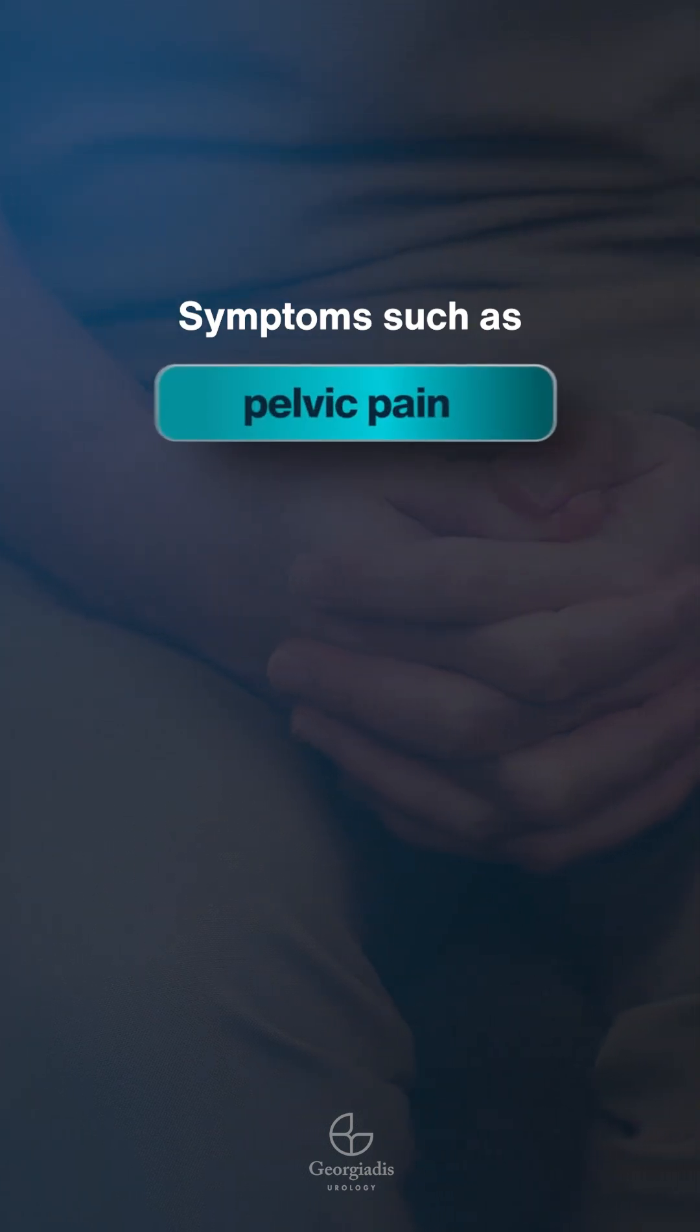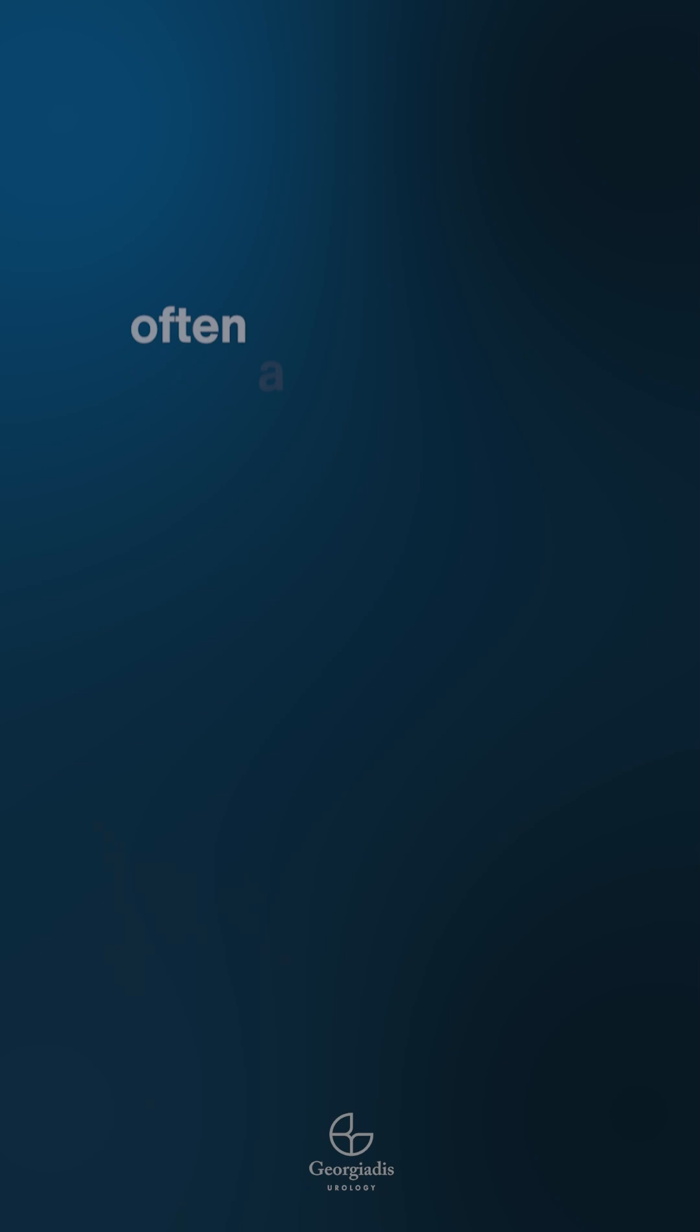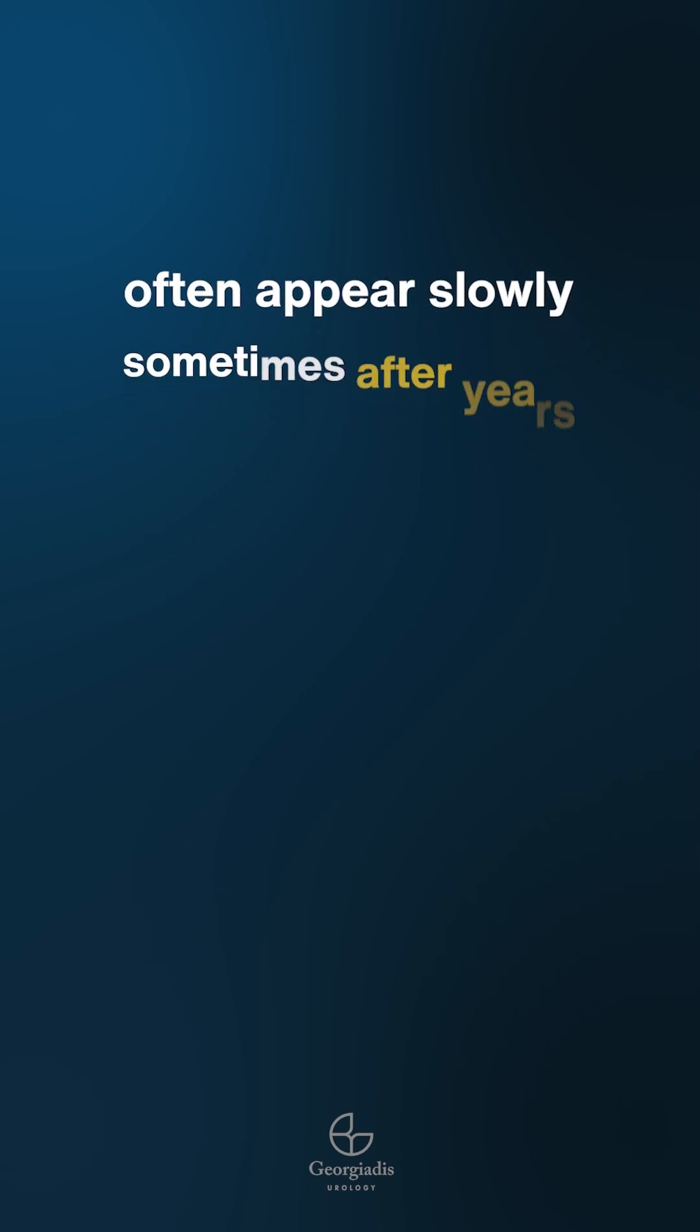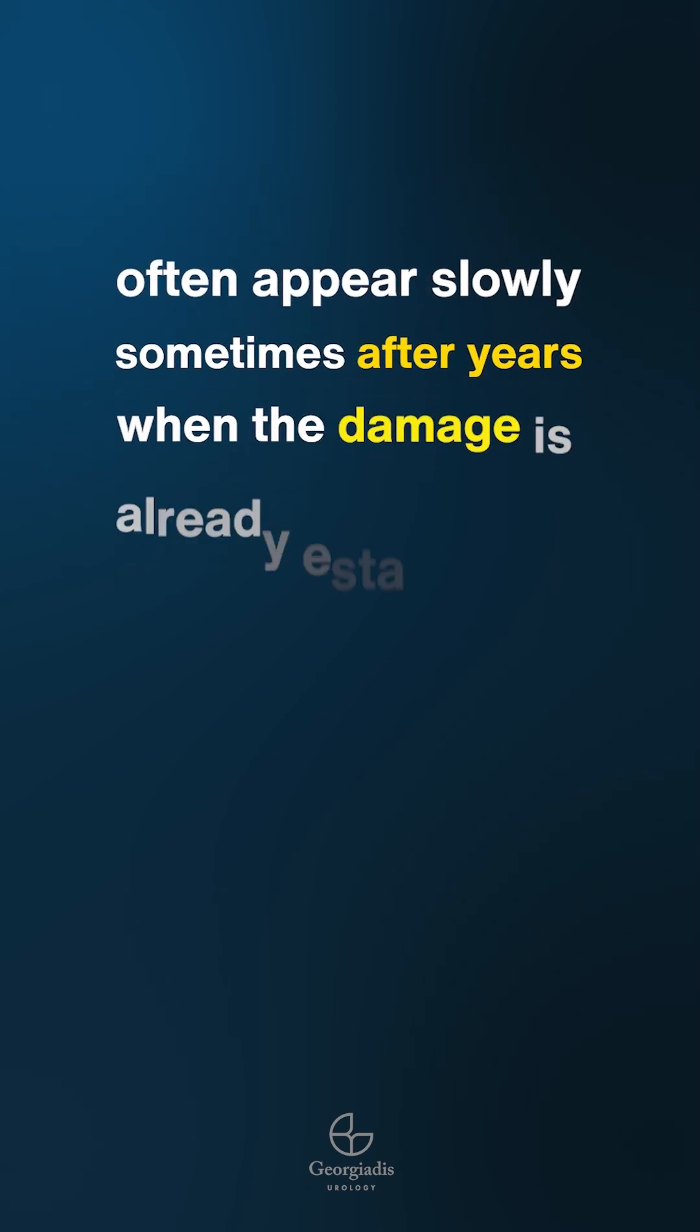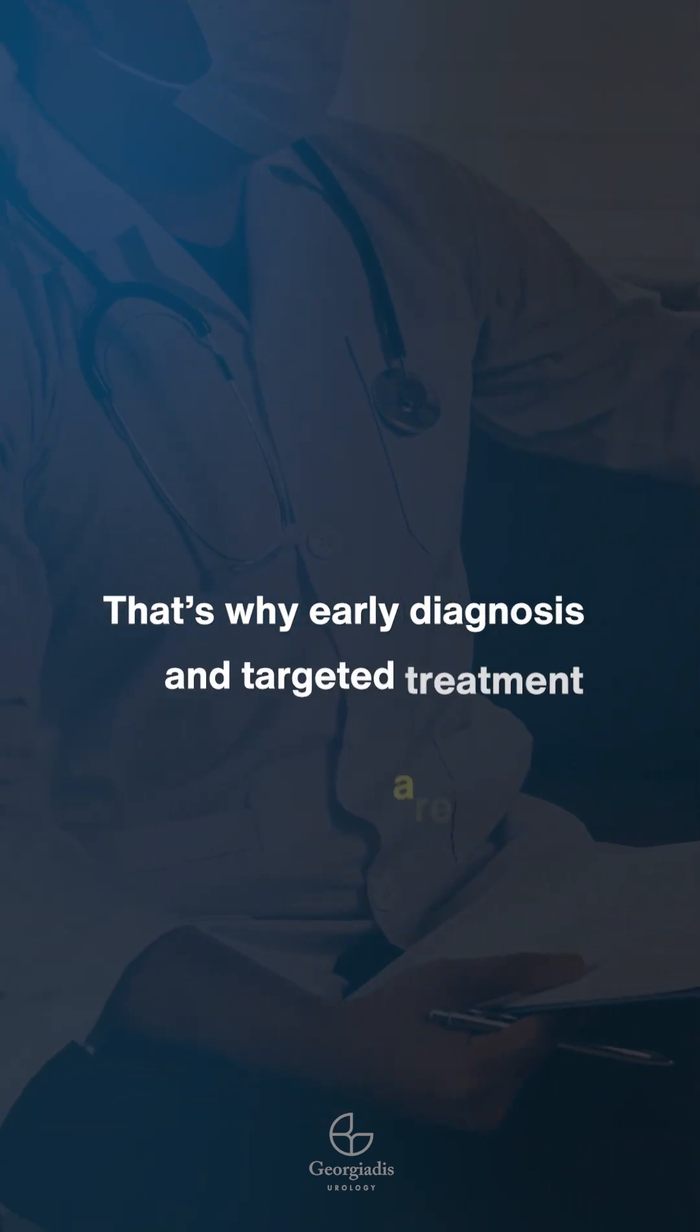Symptoms such as pelvic pain, urinary difficulty, or sexual dysfunction often appear slowly, sometimes after years, when the damage is already established. That's why early diagnosis and targeted treatment are critical.